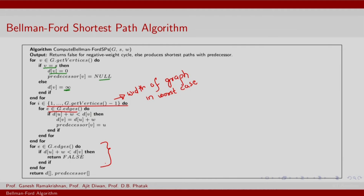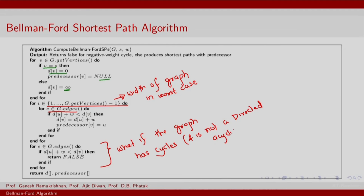So far we have assumed that our graph is a directed acyclic graph (DAG). What if the graph has cycles and is therefore not a DAG? Even if the graph has no negative directed edges, it might still have cycles. Here is a test: if the shortest path can be further reduced even after v minus 1 iterations, then it appears there is a cycle — a path from S to some node that involves a cycle.